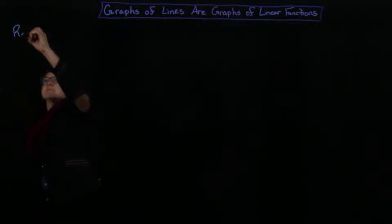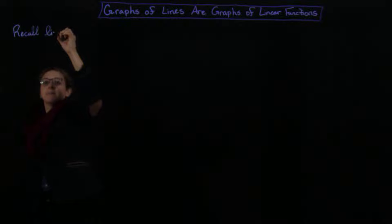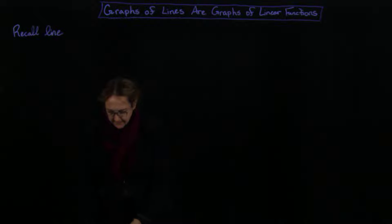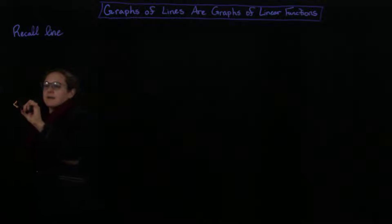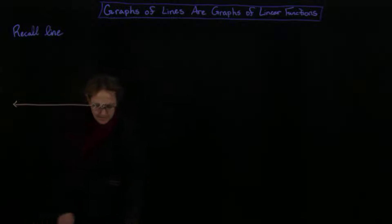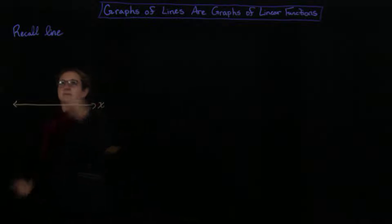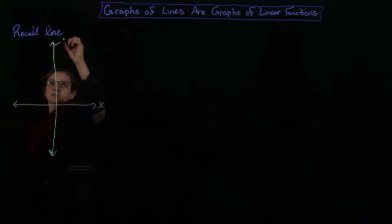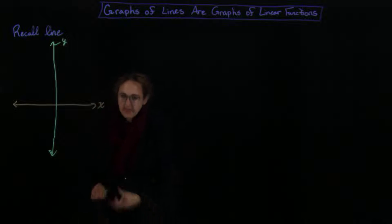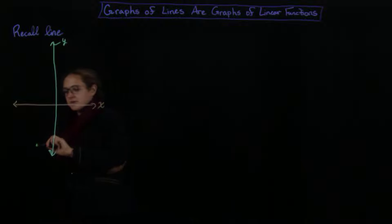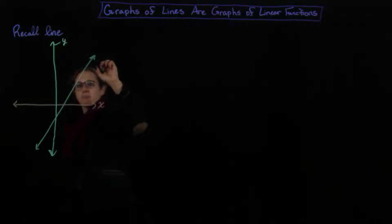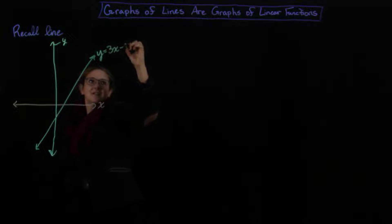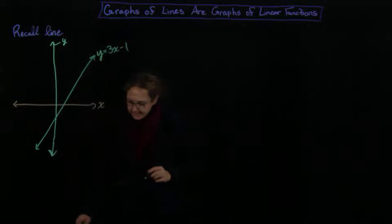So recall the line where you have an x-axis and a y-axis. I have an x-axis like this, and then I have a y-axis like this. A little bit crooked, that's okay. And then I have the graph of some function — the graph of a line, with an equation like this.